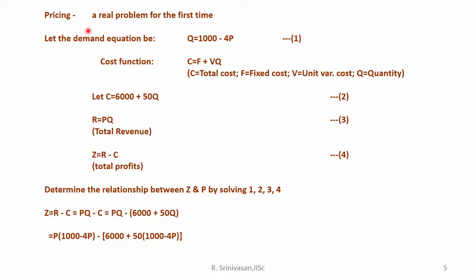When you are pricing a product for the first time, it becomes a real problem. In order to illustrate this whole scenario, I have taken a simple equation. You are looking at the quantity that is produced and then giving an equation for the demand. Let us say this equation is Q = 1000 - 4P.